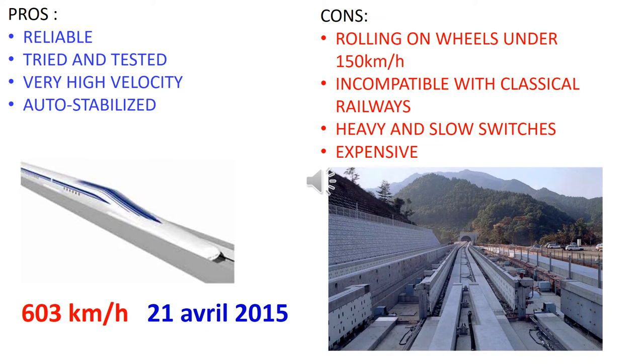With respect to electromagnetic levitation, electrodynamic levitation presents the advantage of auto-stabilization. However, the tracks construction is expensive, the trains roll on their wheels below 150 kilometers per hour, and electrodynamic levitations suffer the same other drawbacks as the electromagnetic levitation systems.